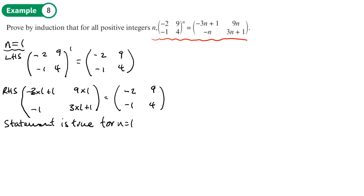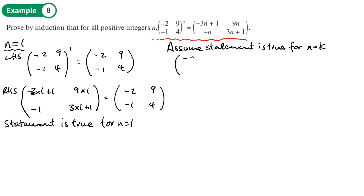We go on to our assumption step, assuming the statement is true for n equals k. So we assume [-2, 9; -1, 4] to the power k equals [-3k+1, 9k; -k, 3k+1].